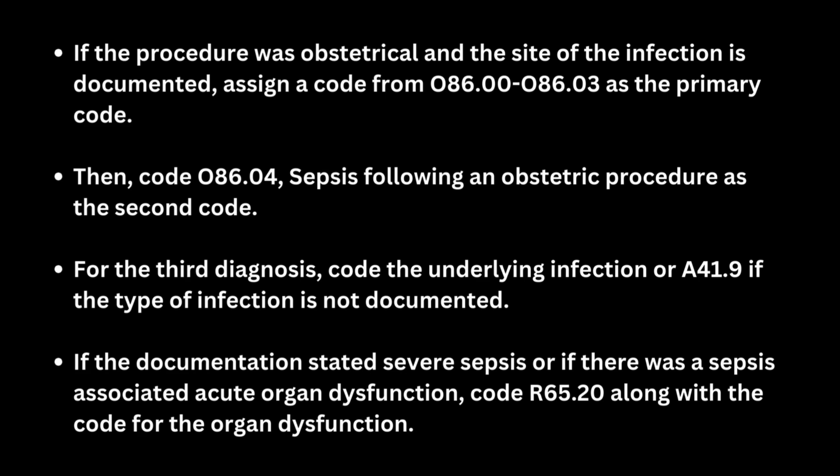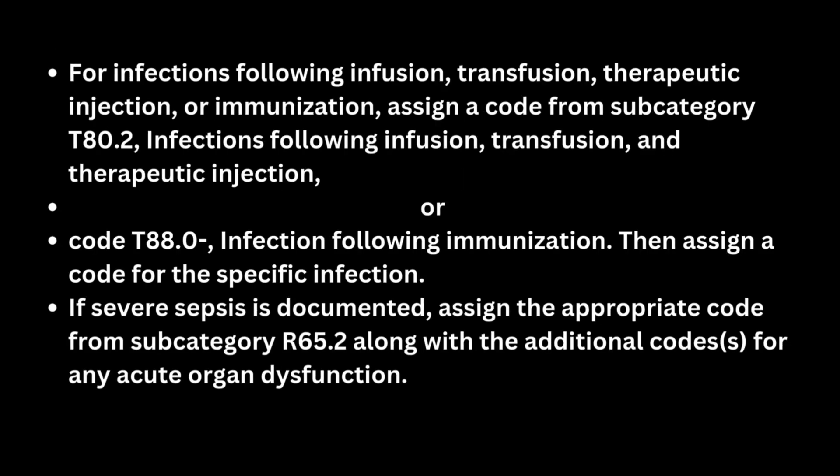If the procedure was obstetrical and the site of infection is documented, the primary code should be from O86.00 through O86.03. The secondary code is sepsis following an obstetric procedure, O86.04. The third code is for sepsis, and the fourth code should be for severe sepsis associated with organ dysfunction.